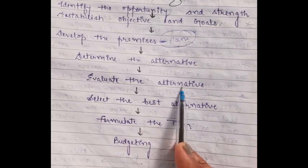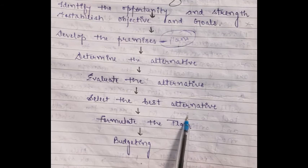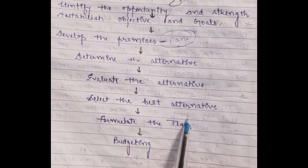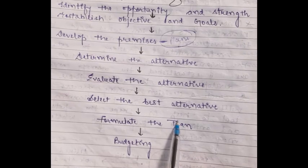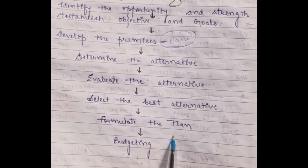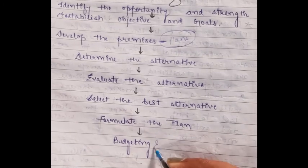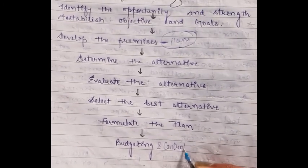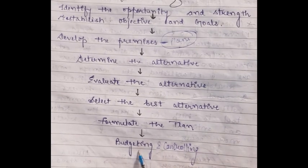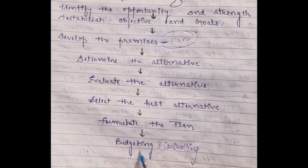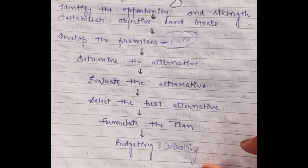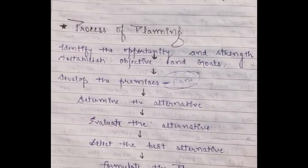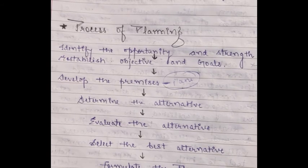When we use feasibility analysis, we select the alternative which is best. When you choose the best alternative, you can formulate the plan and then use the alternative plan. After that comes budgeting — determining how much money is required — and then you can implement it. After doing the budgeting, you can also establish the controlling process. These are all the steps of the process of planning.